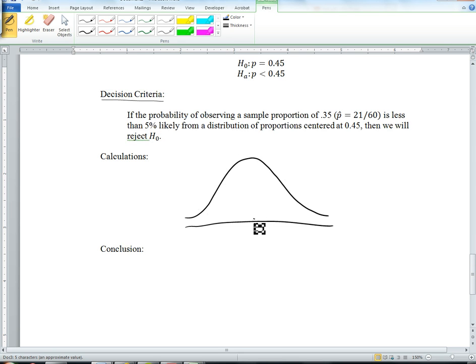So in our calculations, in other words, if this is p equals 0.45, that is the average value of all the sample proportions, and we experienced something out here of 0.35, if the probability of observing something less than this is less than or equal to 0.05, then we'll reject the null hypothesis. Otherwise, we'll fail to do so.